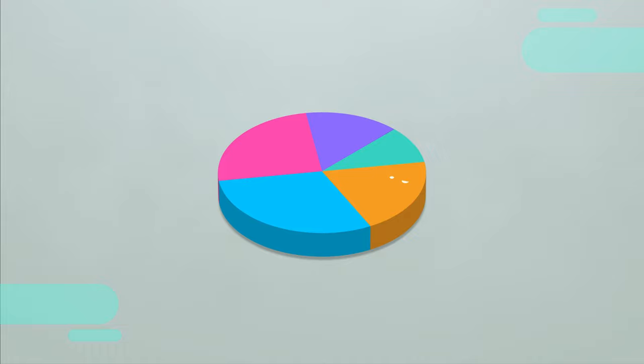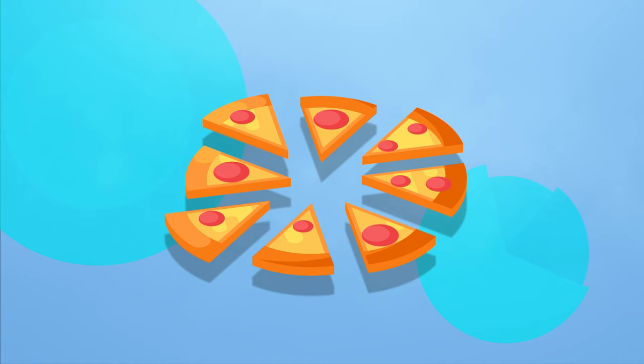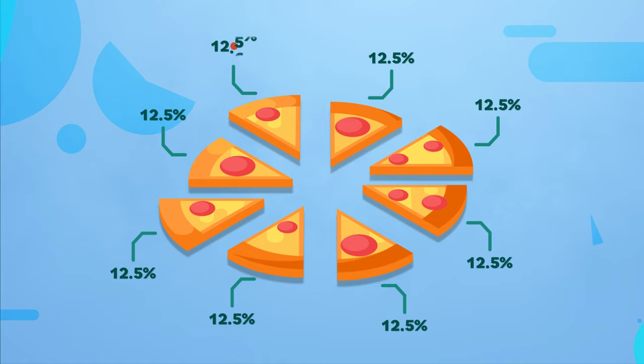A pie chart is a type of graph that's divided into slices, sort of like a pizza. Unlike other graphs, the values that make up each piece are expressed in percentages.